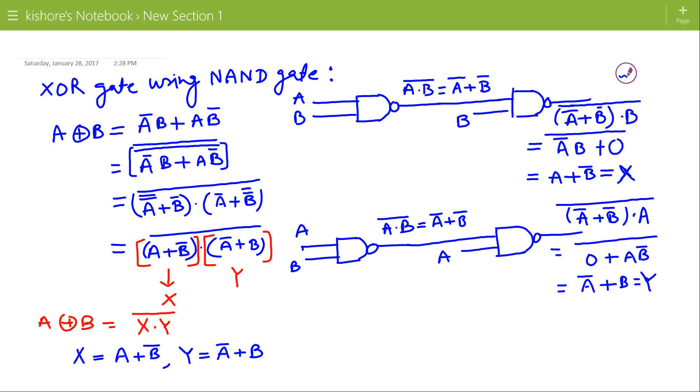Now if I take X and Y as input to NAND gate then it will give NAND of X and Y. And this is nothing but A XOR B.